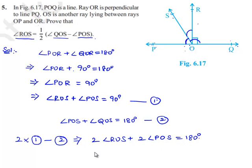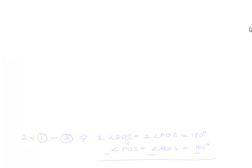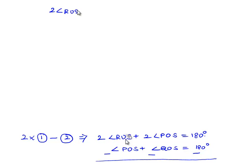That gives us 2 times angle ROS plus 2 times angle POS equals 180 degrees. On subtraction, 2 angle ROS plus 2 angle POS minus angle POS minus angle QOS equals 180 minus 180, which is 0. That is, 2 times angle ROS plus angle POS minus angle QOS equals 0.